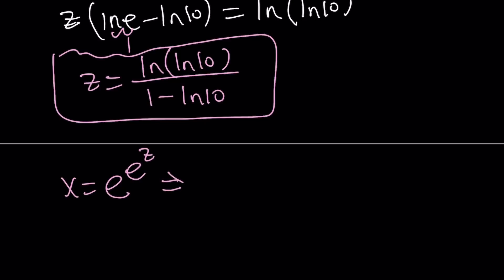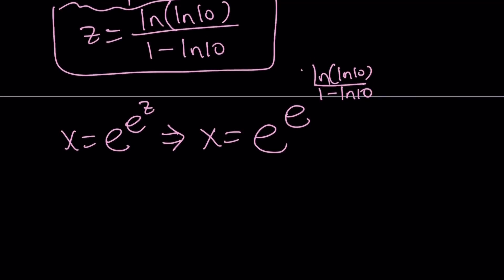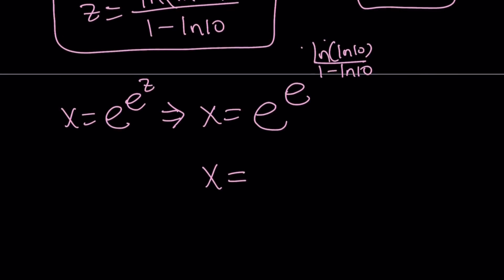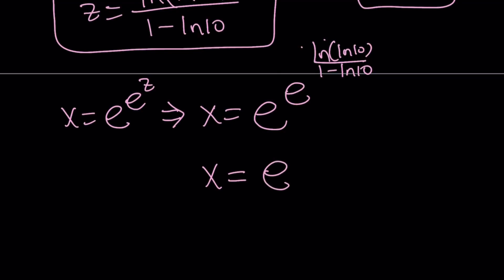Therefore, x can be written as e to the power e to the power ln ln 10 divided by 1 minus ln 10. And obviously, this can be simplified because e to the power ln something is like e to the power ln x is equal to x. So by using that and kind of expressing the denominator as 1 over something, we can basically write the x as, it's a little simpler than this, maybe, e to the power ln 10 to the power 1 over 1 minus ln 10.